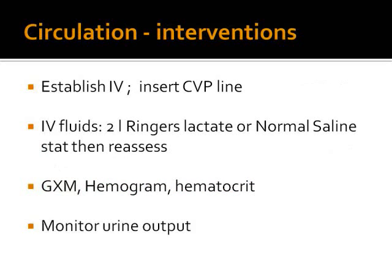The interventions in Circulation are: we establish intravenous access and draw blood for the requisite tests. We insert a central venous pressure line, especially in severely injured patients or patients in shock, because we need to monitor central venous pressure. We then give intravenous fluids — the protocol is to give 2 liters of Ringer's lactate rapidly and monitor for response.